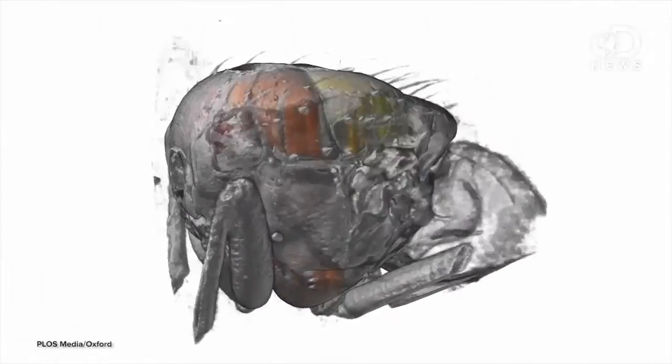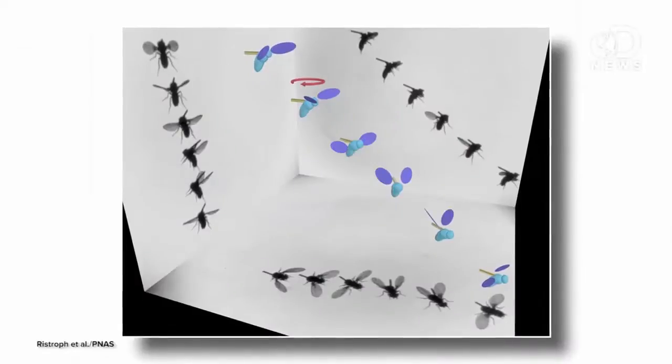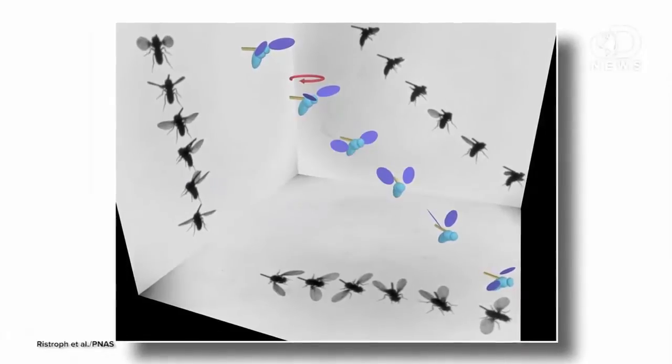Seriously, a fly's steering muscles are about the width of a human hair, and we can now see their movements in 3D and study them. If you're asking why you'd want to study those — a fly's flight system can perform acrobatic maneuvers more complicated than anything man-made. So the more we know about how they work, the smaller, simpler, and more intelligent our flying machines get.